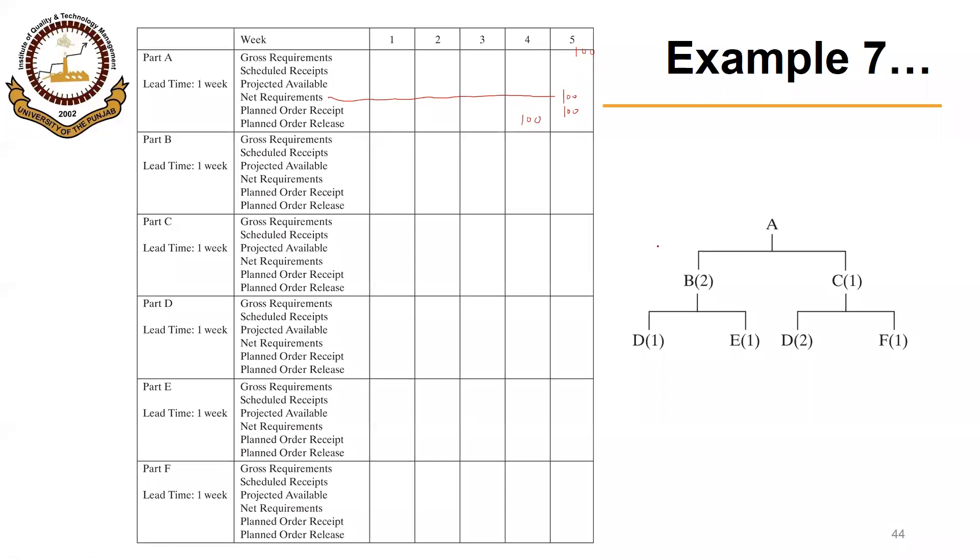Then we move to item B, which is the child of A. So its gross requirements will be determined based on planned order release of A, so that will be 100 times 2, because each A requires 2 B's, so that will be 200 in week 4. It is given that we have 20 B's available, so we will carry those 20.